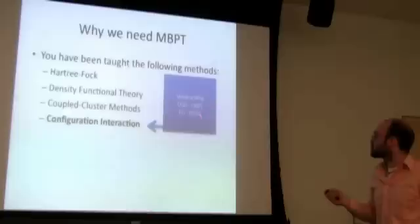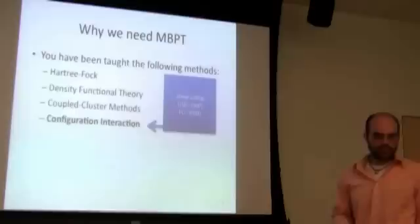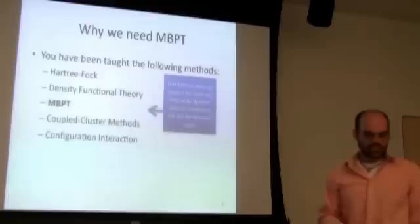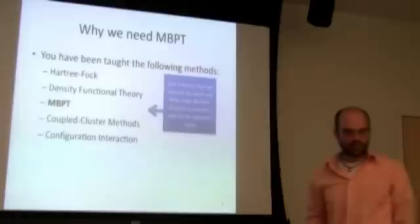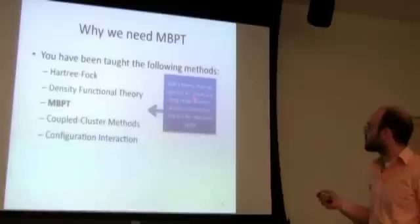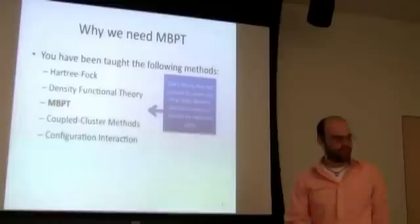Configuration interaction scales so poorly — put an exclamation point on that. CISD scales alright when truncated, but once you truncate it, it loses nice properties like size extensivity. So there's a nice niche for a level of theory that scales to N^5 — not the scaling of coupled cluster, but not the N^4 of Hartree-Fock or DFT. We needed a theory that accounts for long-range dynamic electron correlations, has the ability to be improved upon, and where we can increase the basis set, get a better answer, or do CBS extrapolations.